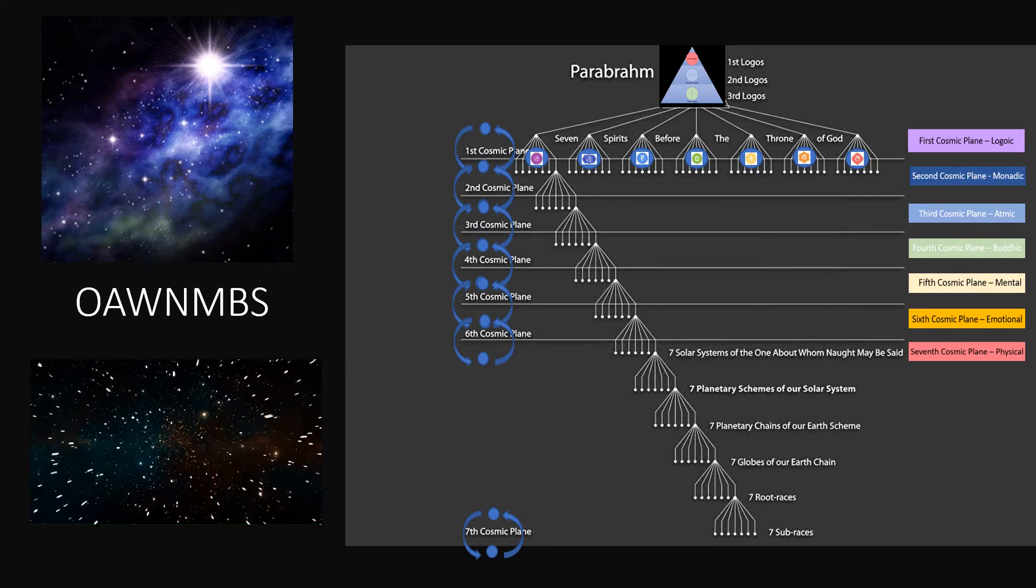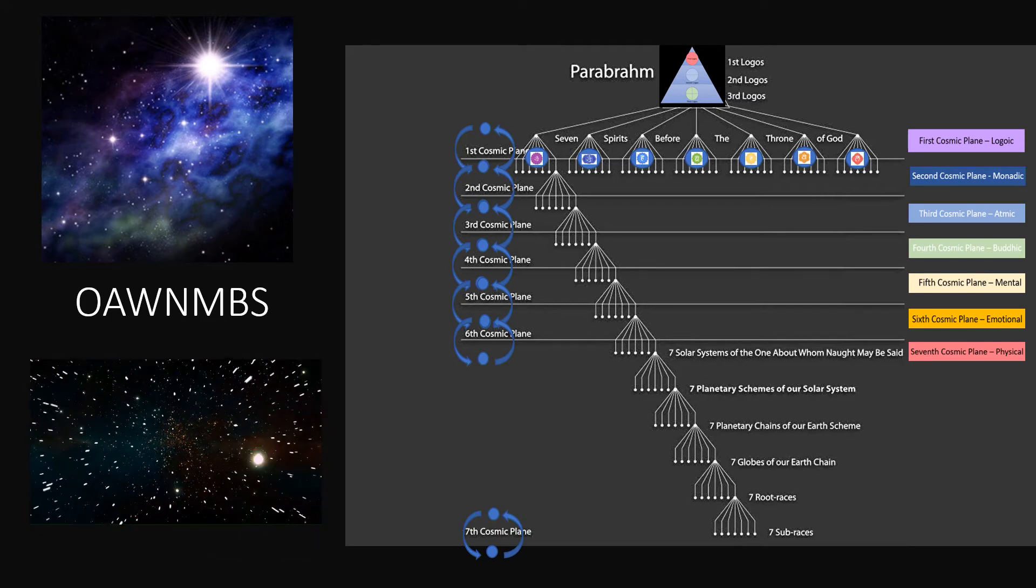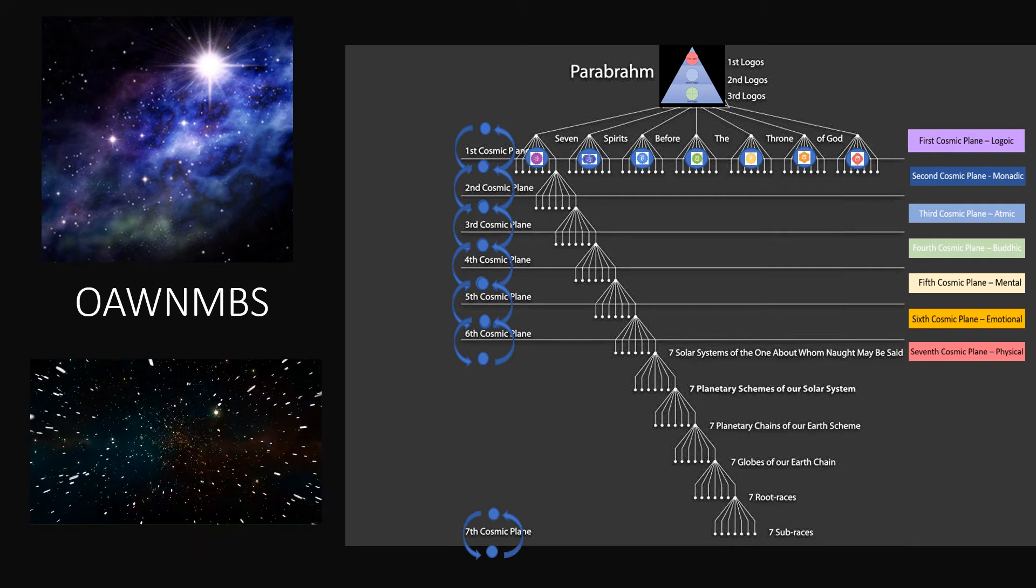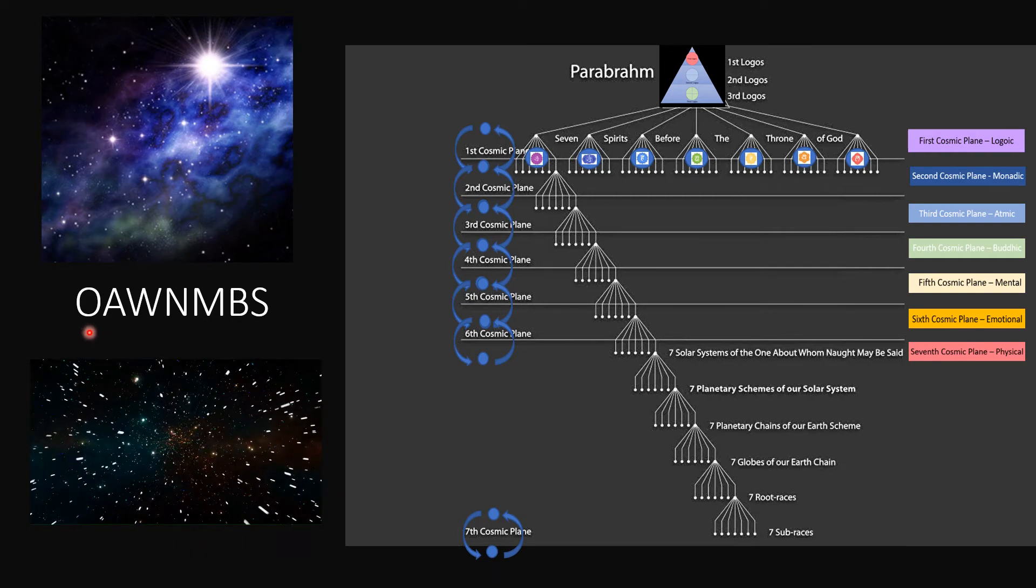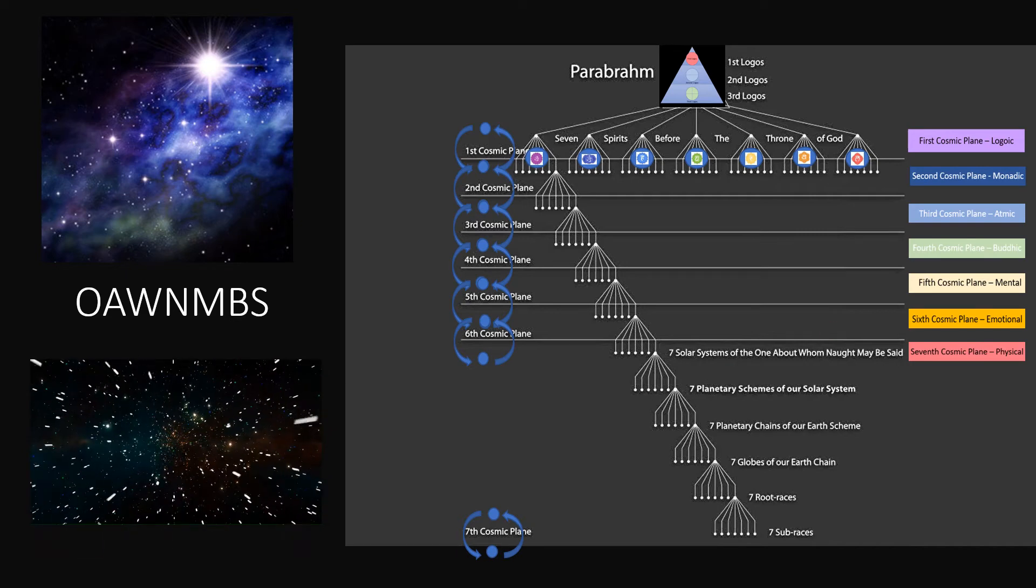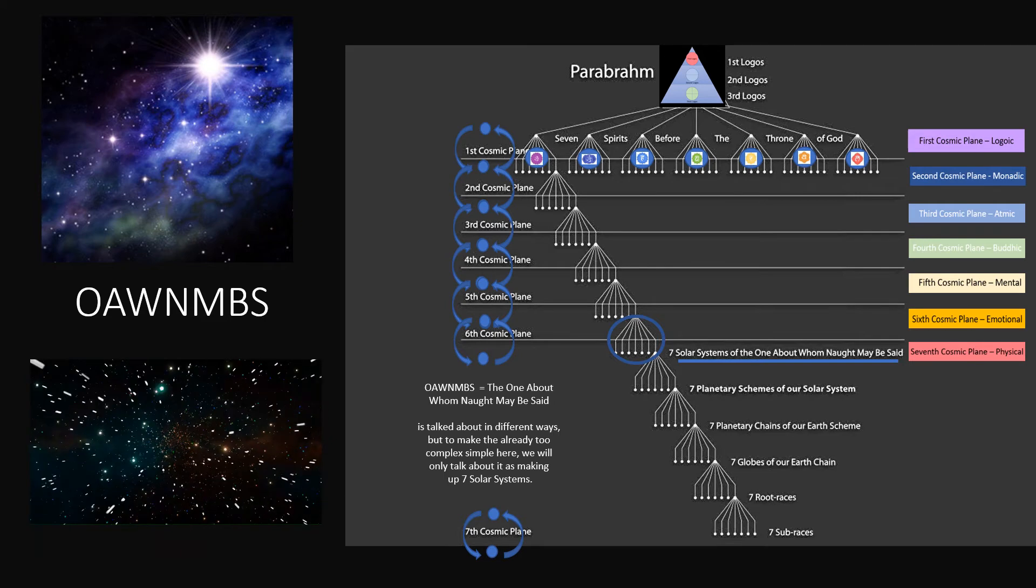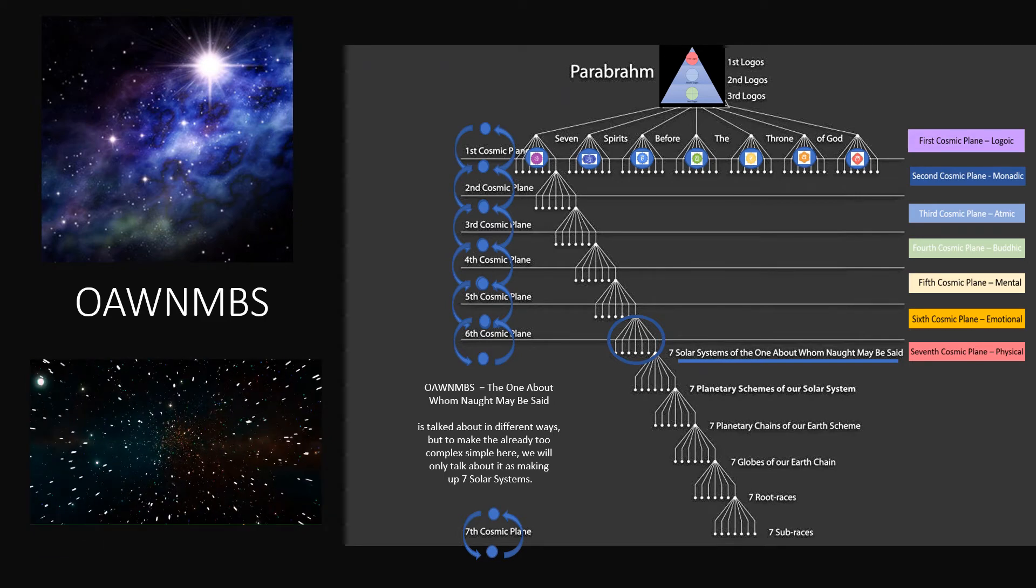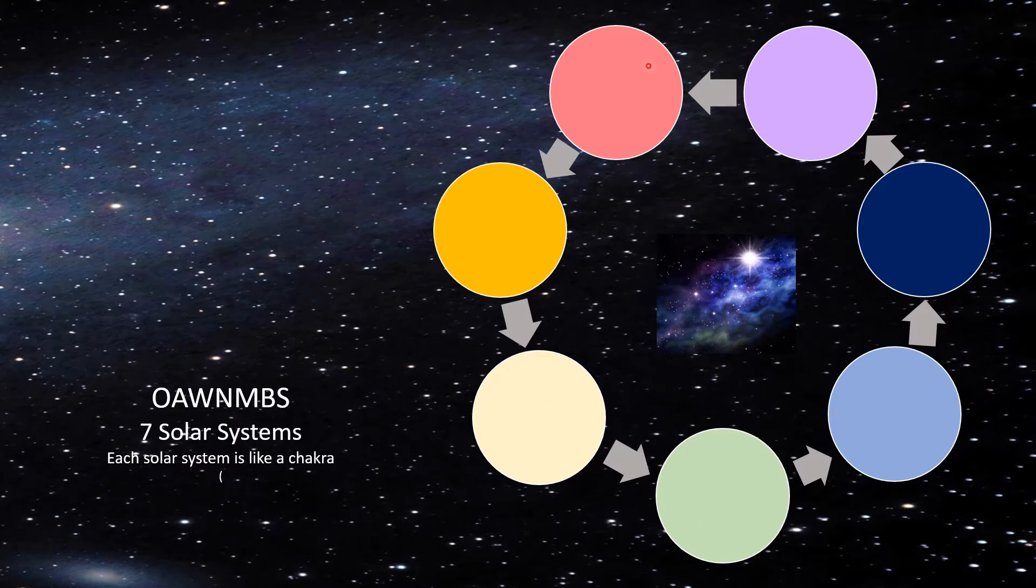So here we are in the physical plane. And we are in that physical plane, part of something called a Womnibus. Now that is essentially a symbol for one about whom naught may be said. We see that over here. And what is a Womnibus? It is essentially seven solar systems. Now some people say it is more than that, but we're going to focus on the seven solar systems here. Now you're going to see these colors appear. They're basically meant to be a reminder throughout this video that we're always talking about a duplicated process. So we have the seven spirits in the throne room. They are seven chakras of the Parabrahm.